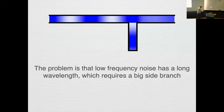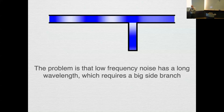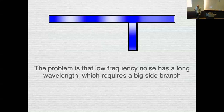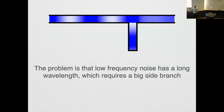Quarter-wavelength resonators are common for quieting things like vacuum cleaners — they work well for high-frequency noise, which needs only a short resonator. But for low-frequency noise the quarter wavelength is very long, and you don't want a meter-long resonator on your vacuum cleaner. The challenge is: how do you reduce the physical length of the resonator while making it act as though it's longer?